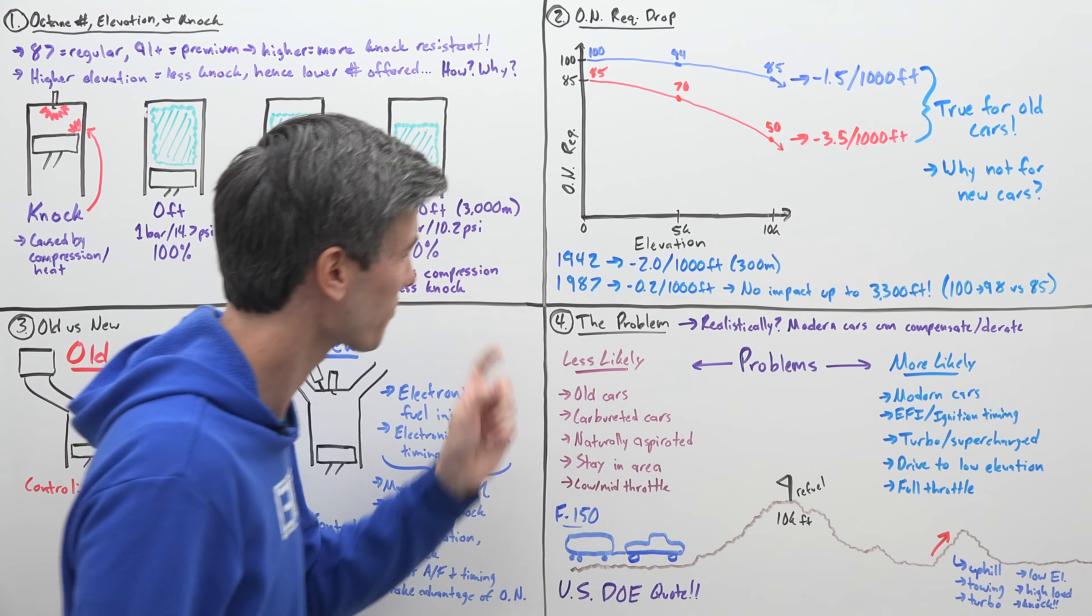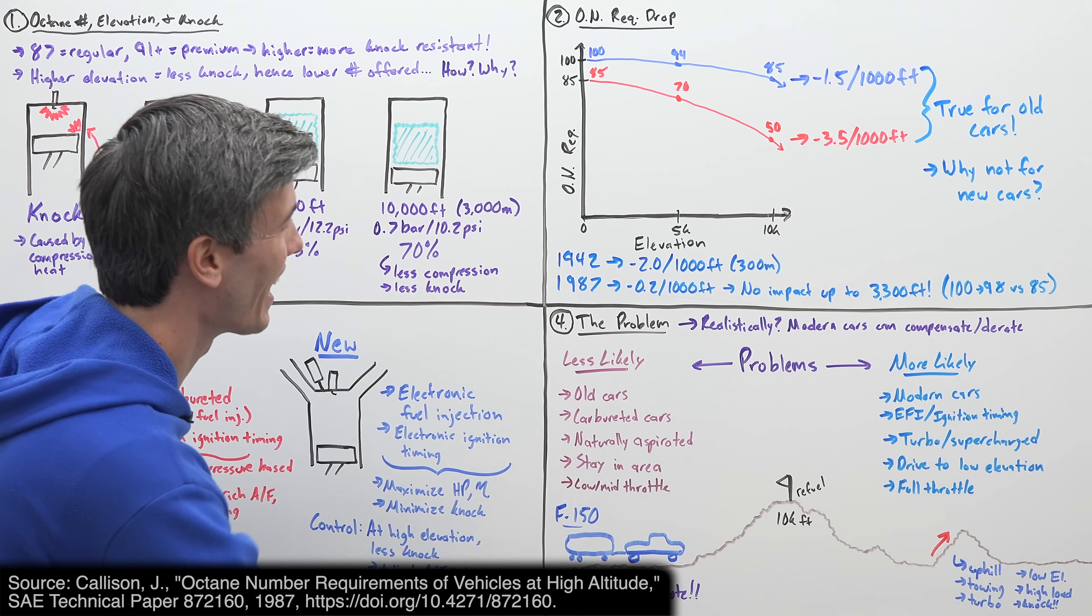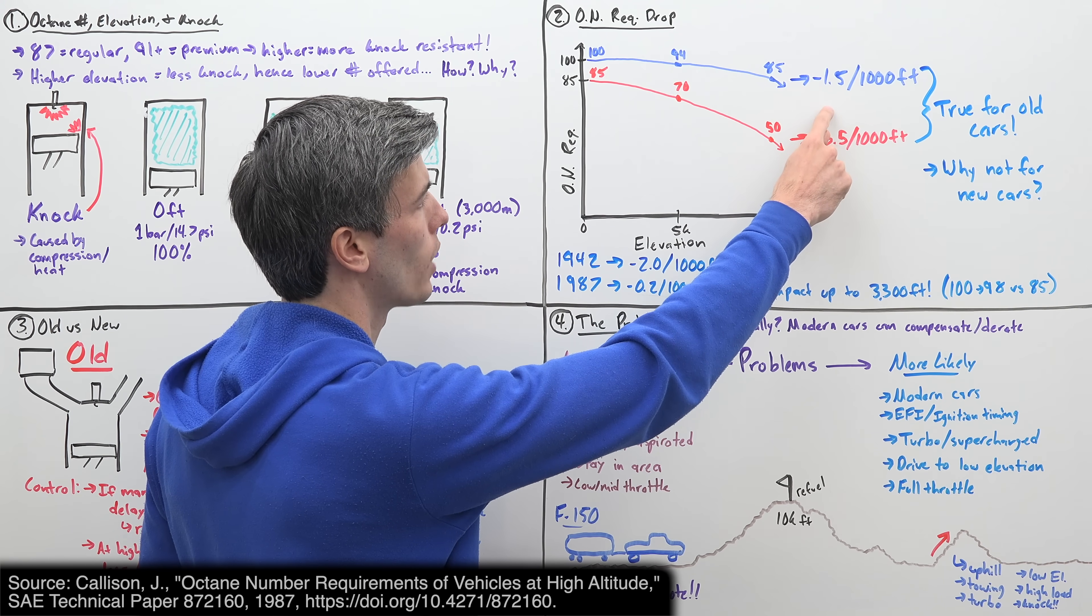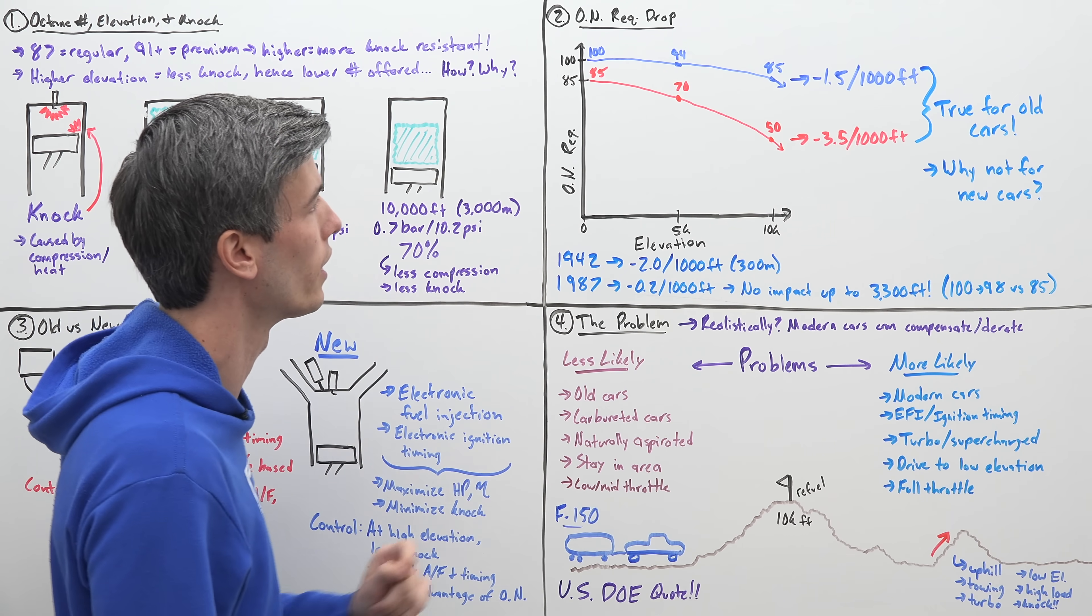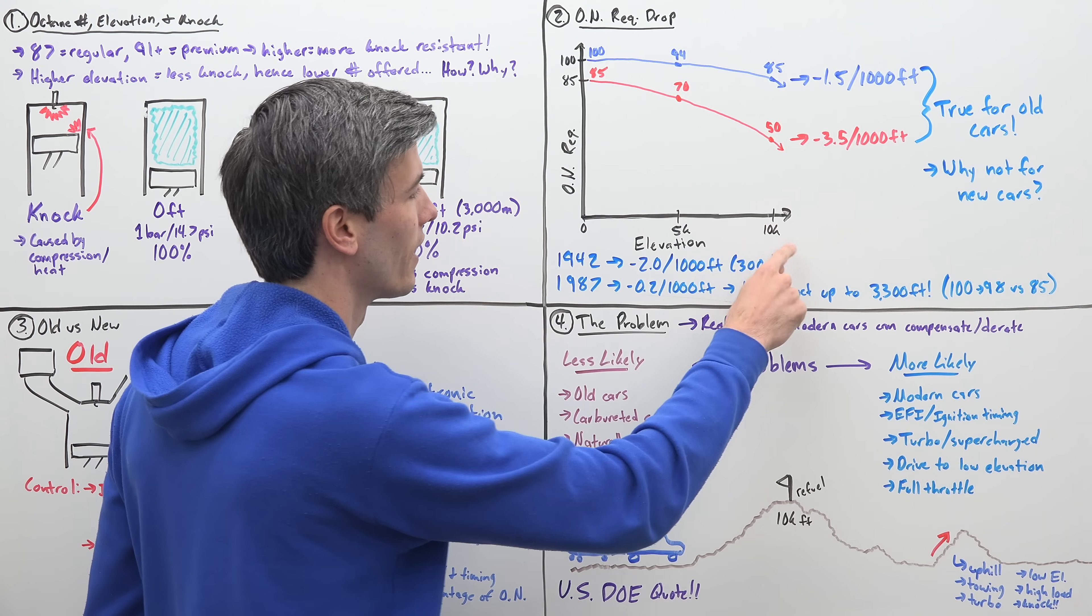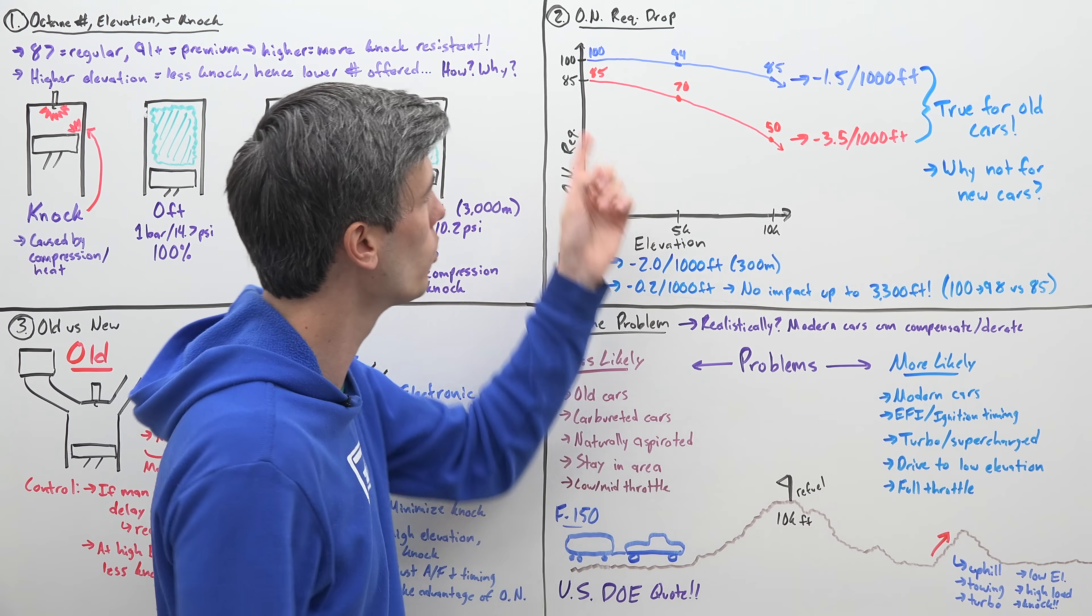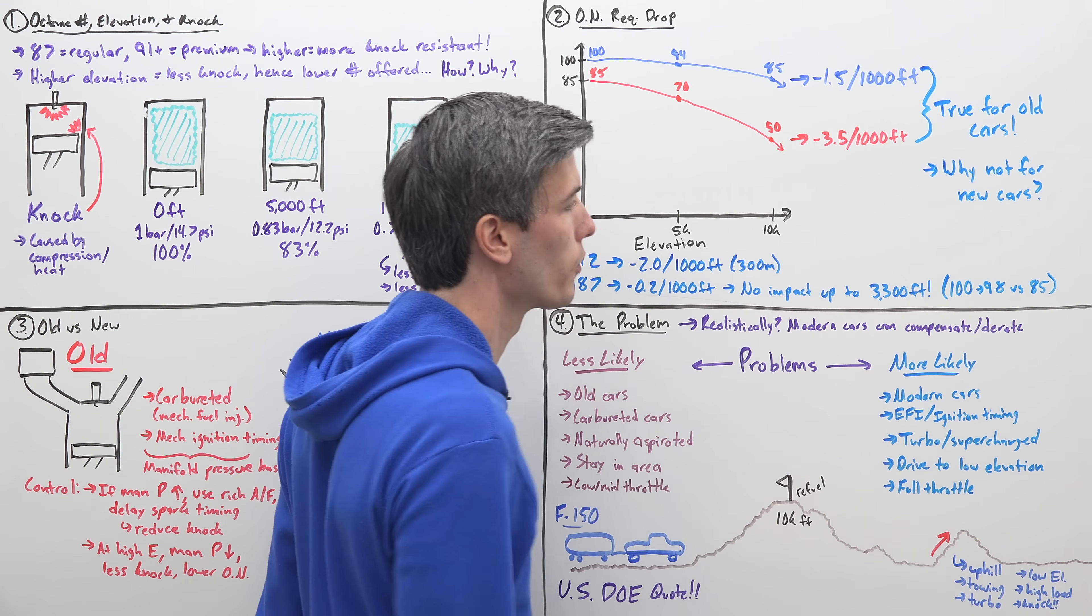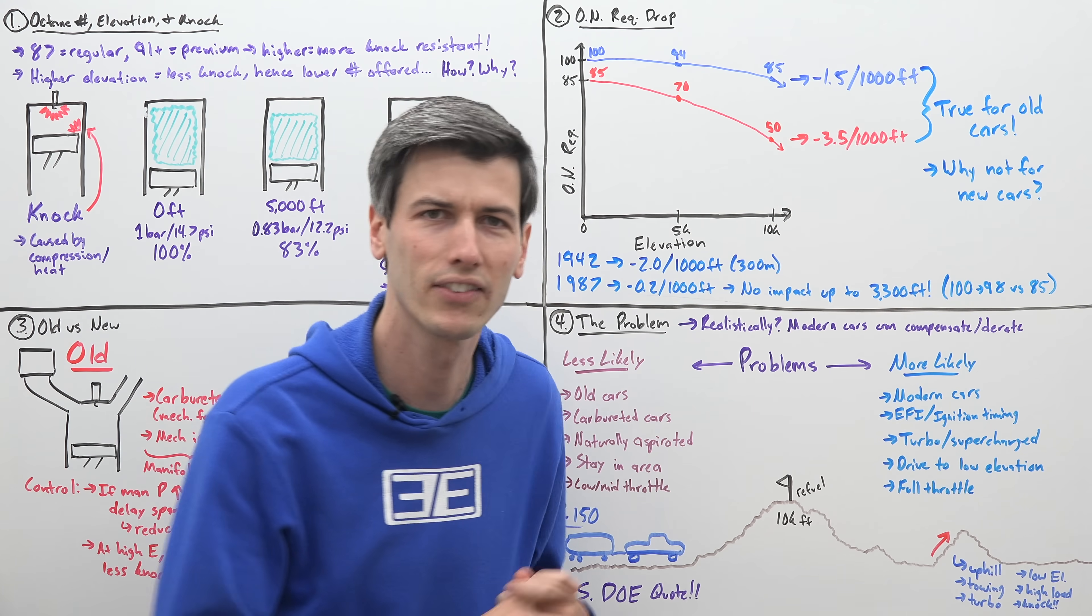This is true for older cars. I found another study looking to test this out on modern cars, modern being 1987. Instead of this number of about two octane numbers dropping, the requirement dropping by two for every 1,000 feet, now it was just 0.2 for every 1,000 feet. For example, this 100 with a modern car, instead of dropping to 85 at 10,000 feet, the octane requirement would drop to 98. So barely not at all. For that newer car, you weren't able to get away with that lower octane number. They said, in fact, there was no impact up to 3,300 feet. Pretty crazy that these modern cars were not able to reduce the octane number as much.